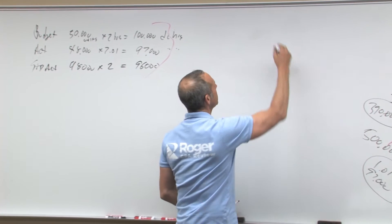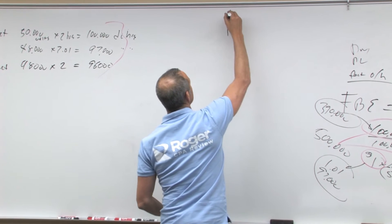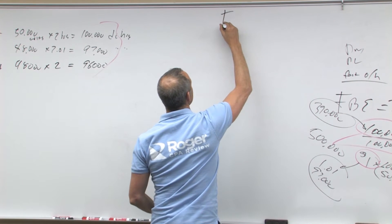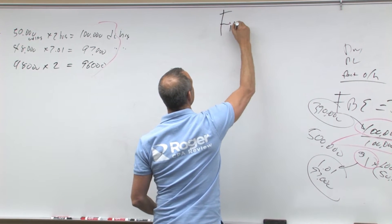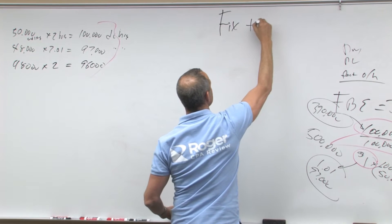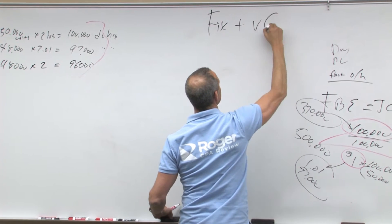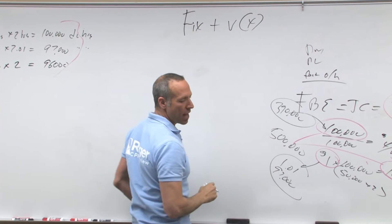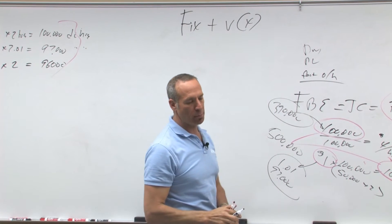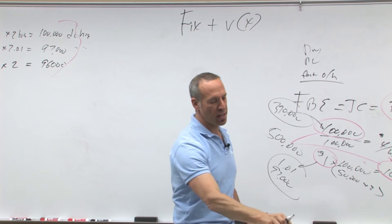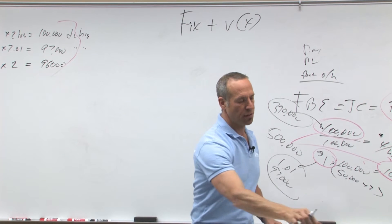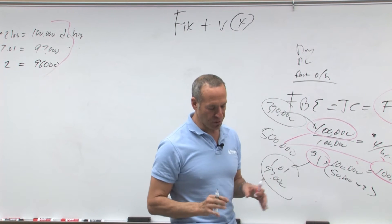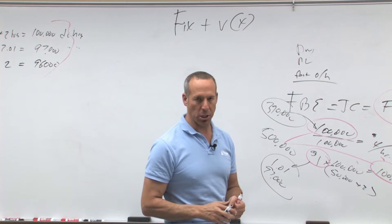Let's set up the flexible budget equation. The flexible budget equation is fixed plus variable times X. That is the flexible budget equation.